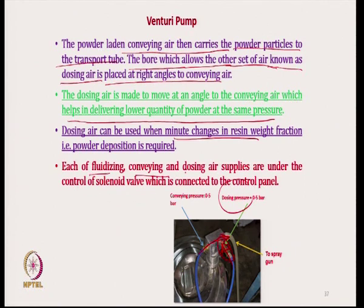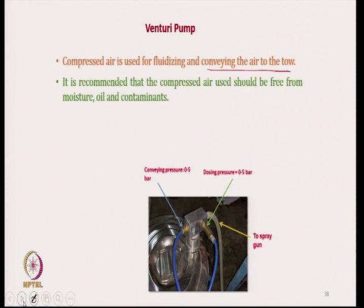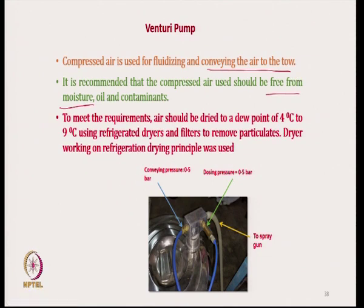Each of fluidizing, conveying, and dosing air supply are used to control the process; the pressure is controlled by solenoid valve which is controlled by a control panel — so we can control the dosing air pressure and the conveying air pressure. The compressed air used for fluidizing and conveying has to be dry and free from moisture; otherwise clogging and agglomeration of particles will occur. It is dried below dew point — at dew point temperature of 4 to 9 degrees — using a refrigerator dryer, and then filtered to remove any moisture.